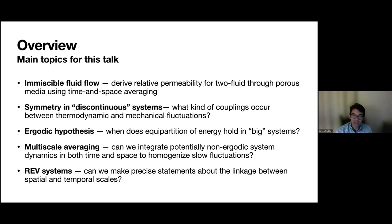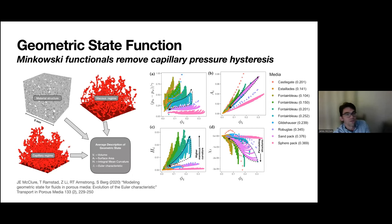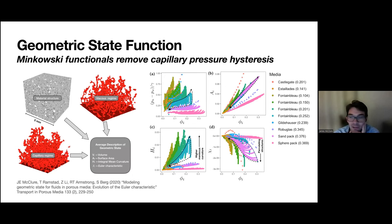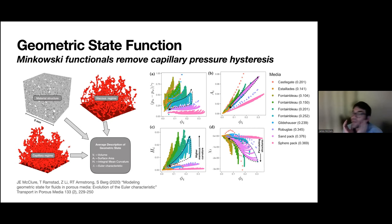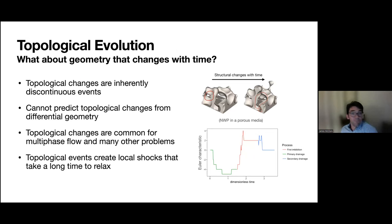The geometric picture driving this is based on the Minkowski functionals, which I know many of you are already familiar with — I won't dwell on it with this group. The basic idea is that you can describe the average geometry of a structure with geometric invariants: volume, surface area, integral mean curvature, and the Euler characteristic. You can essentially remove capillary pressure hysteresis based on this geometric description.